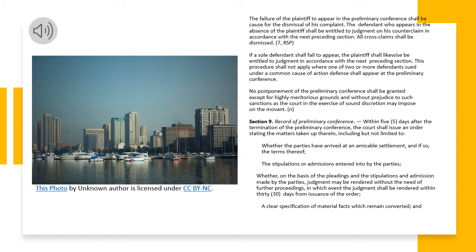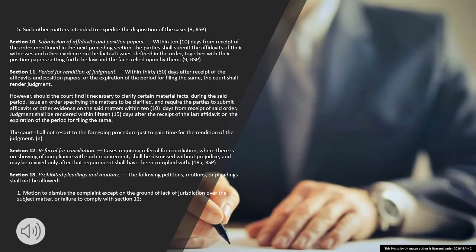Section 9. Record of Preliminary Conference. Within five days after the termination of the preliminary conference, the court shall issue an order stating the matters taken up therein, including but not limited to: whether the parties have arrived at an amicable settlement, and if so, the terms thereof; the stipulations or admissions entered into by the parties; whether, on the basis of the pleadings and the stipulations and admissions made by the parties, judgment may be rendered without the need of further proceedings, in which event the judgment shall be rendered within thirty days from issuance of the order; a clear specification of material facts which remain controverted; and such other matters intended to expedite the disposition of the case.